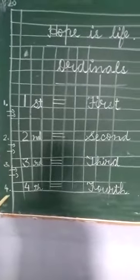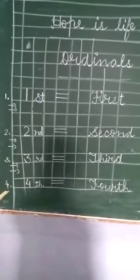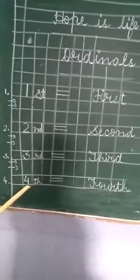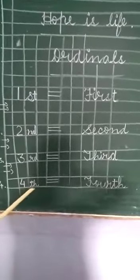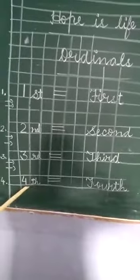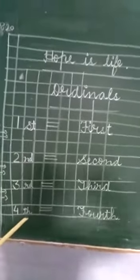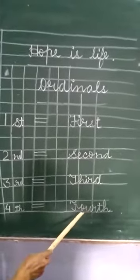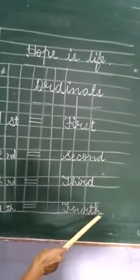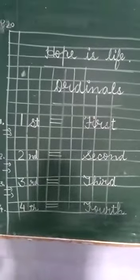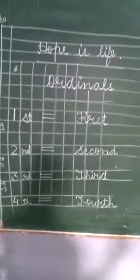Then you write number 4. This is cardinal and its ordinal is fourth. We add TH, okay? We add TH in fourth. It becomes ordinal. The spelling of this ordinal number is fourth, F-O-U-R-T-H. Students, do your work very neat and clean writing.